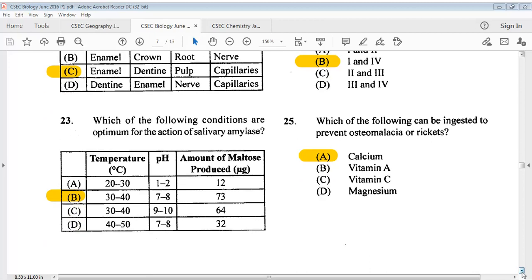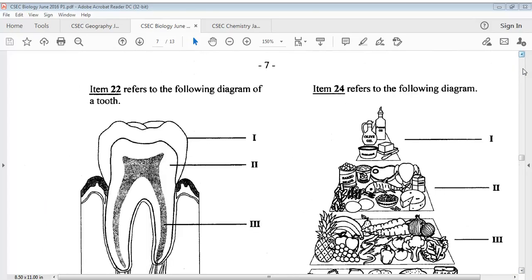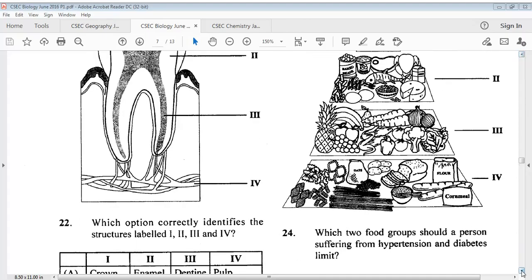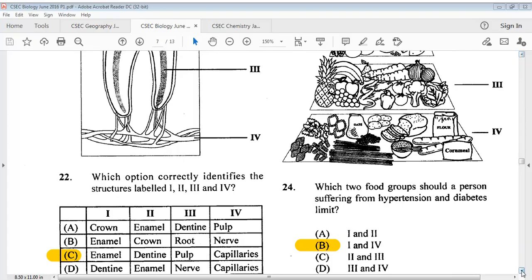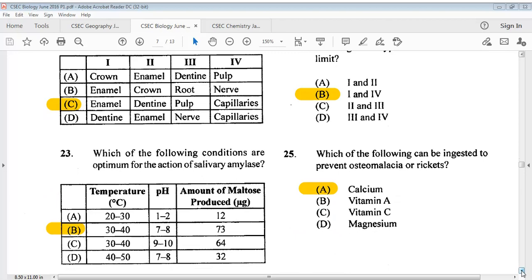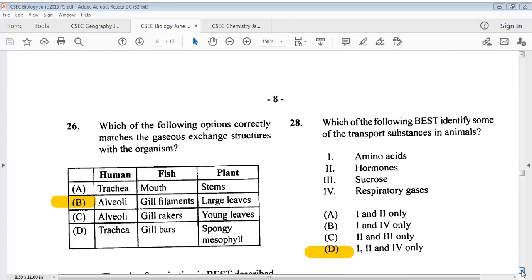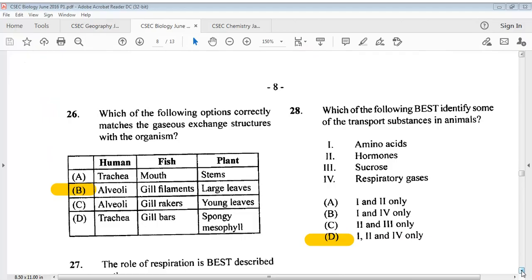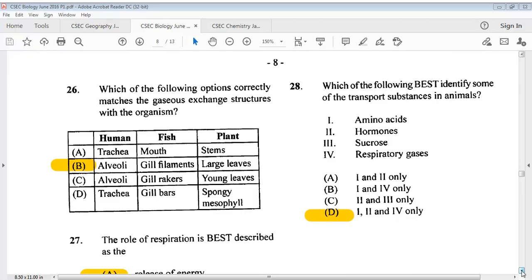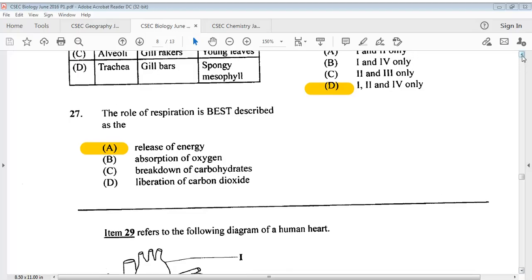The answer for question 23 is B. For question 24, we have a food group diagram. It says which two food groups should a person suffering from hypertension and diabetes limit? The answer option is B, 1 and 4. Question 25, the answer is A. For question 26, the answer is B. Question 27 says the role of respiration is best described as. The answer is A, release of energy.